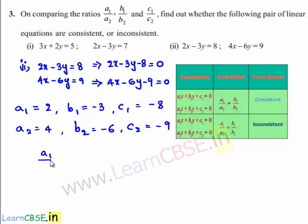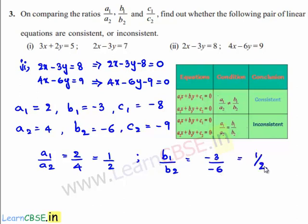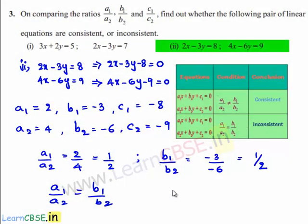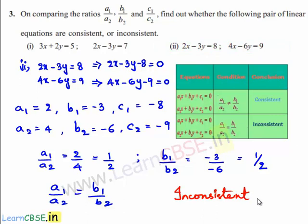b2 is equal to minus 6 and c2 is equal to minus 9. Now, the value of a1/a2 is equal to 2/4, which is nothing but 1/2, and the value of b1/b2 is equal to minus 3 divided by minus 6, which is nothing but 1/2. So a1/a2 is equal to b1/b2. By using the second condition, if a1/a2 is equal to b1/b2, we say that the given set of linear equations are inconsistent. Therefore, the given equations 2x minus 3y is equal to 8 and 4x minus 6y is equal to 9 are inconsistent.